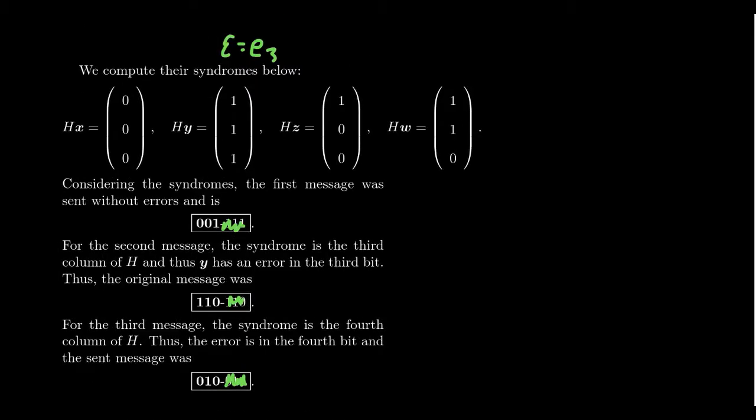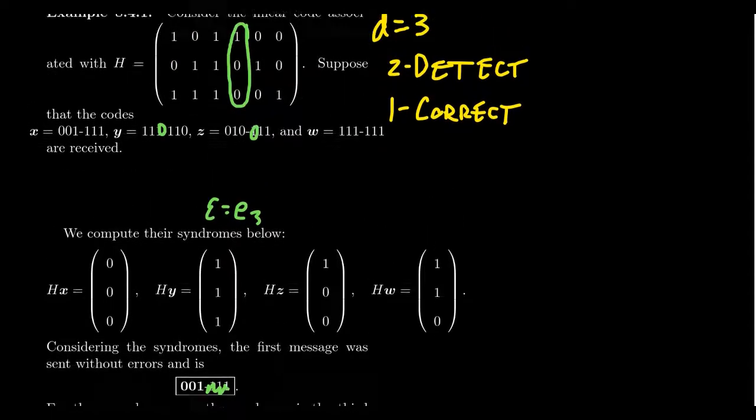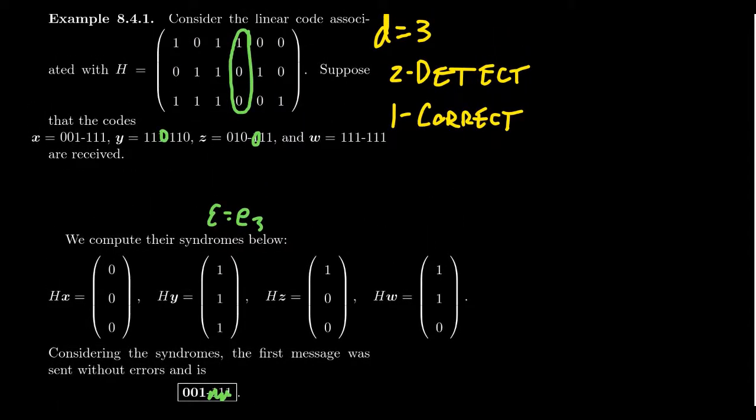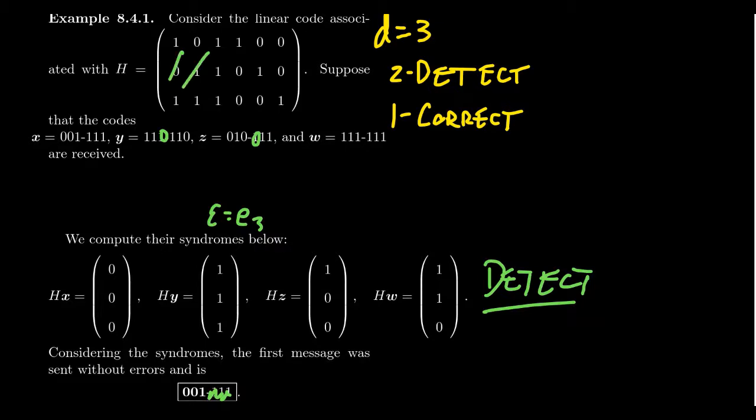Now, things get a little bit more funky when we look at our last example, H of W, here. So the syndrome this time is 110. Okay. That's not 0. So we've detected an error. Error, error, error. We detected an error. So pay attention to that. We did that for H of Y and H of Z as well. So a Z and Y both had errors. And a W has as well. But the difference here is when you look at H, it's like 110. No, no, no, no, no, no, no. Oh, okay. There are, there's no column that looks that way. So where did this error come from? There has to be at least two errors.